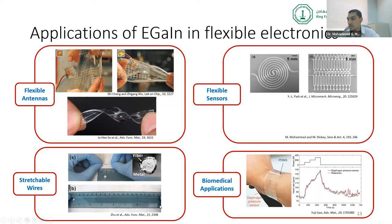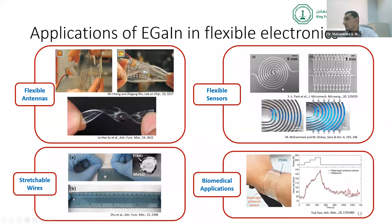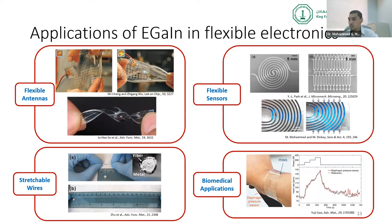Liquid metal has also been used in pressure sensors, strain sensors, and biomedical applications — for example, a device made with gallium alloy was used to measure heart rate and blood pressure. It has a wide range of applications: it can be applied to many surfaces, flexed, or stretched, and because of its liquid nature, it can flow through channels regardless of shape without affecting device performance at different strains.